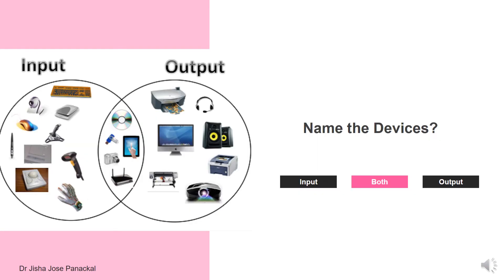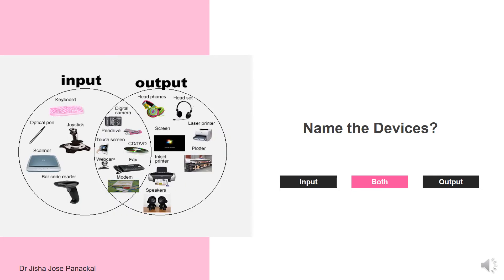I have given you a small task to identify input, output, or both-type I/O devices. I hope you could identify at least two to three devices. Let's check some in the next slide. For input devices, we have a keyboard, an optical pen or light pen, a scanner, a barcode reader, a joystick, and many more.